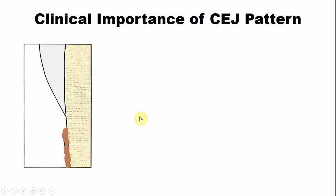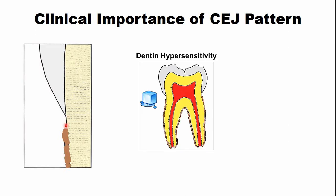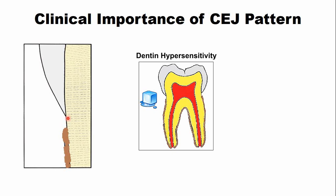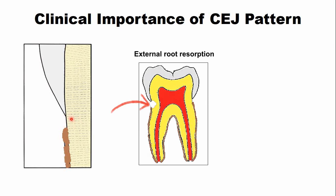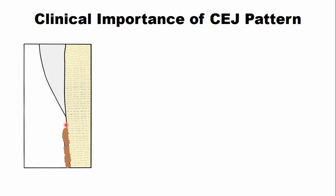In this picture, you can see there's a gap between the enamel and the cementum. So the root dentin is exposed. This type of junction is clinically important because the exposure of the root dentin may result in dentin hypersensitivity. It may result in increased risk of external root resorption in which the root is resorbed by the odontoclast cells. This kind of junction may increase the risk of root caries.